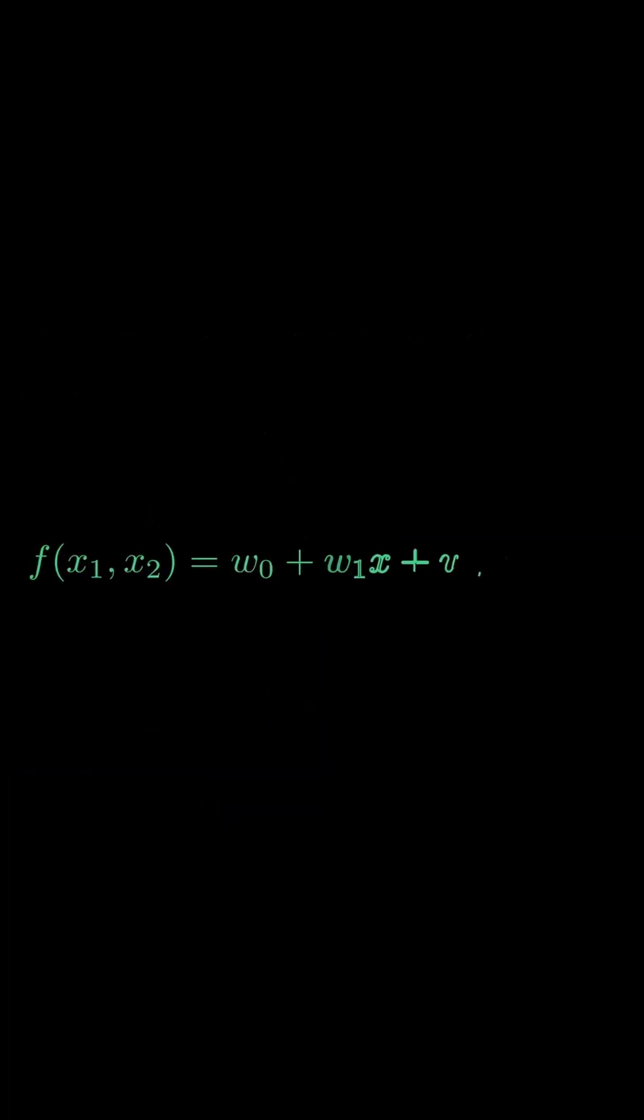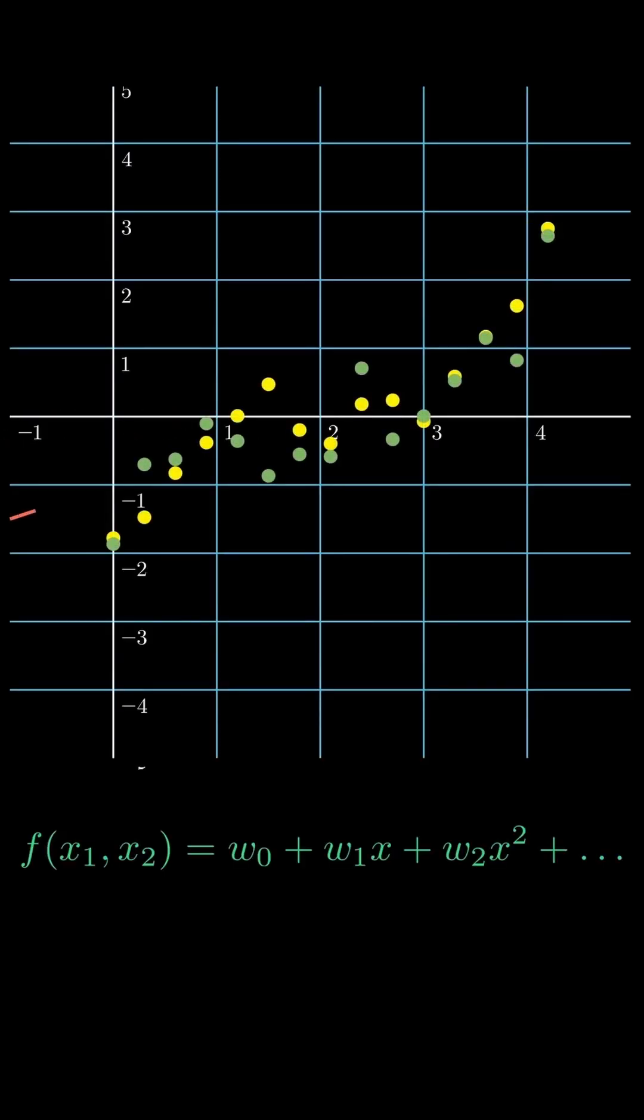So why do we care about polynomials in machine learning? Think of x as your data. By adding higher-order powers of input features, the model can learn curved relationships. That's called polynomial regression.